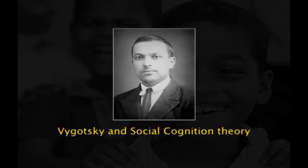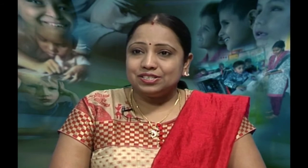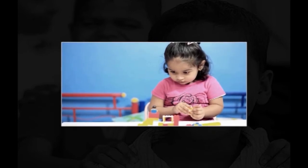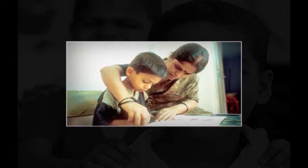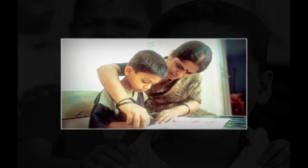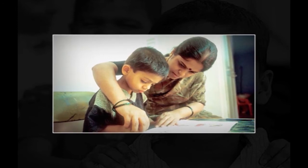Now we will see Vygotsky's social cognition theory. The social cognition learning model asserts that culture is the prime determinant of individual development. Humans are the only species to have created culture, and every human child develops in the context of culture. Therefore, the child's learning development is affected in large and small ways by the culture, which includes the culture of the family and the environment in which he or she is embedded. Culture makes two sorts of contributions to a child's intellectual development: first, through culture the children acquire much of the content of their thinking — that is, their knowledge.